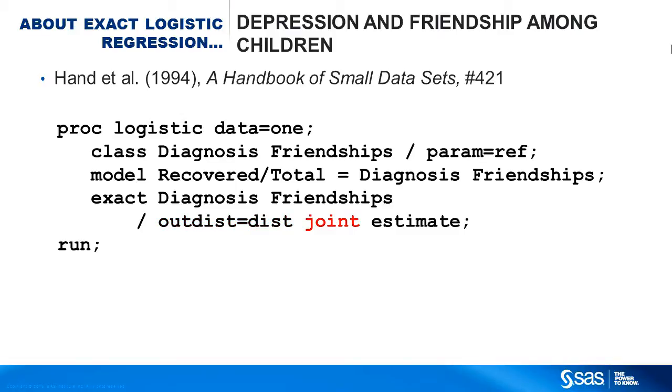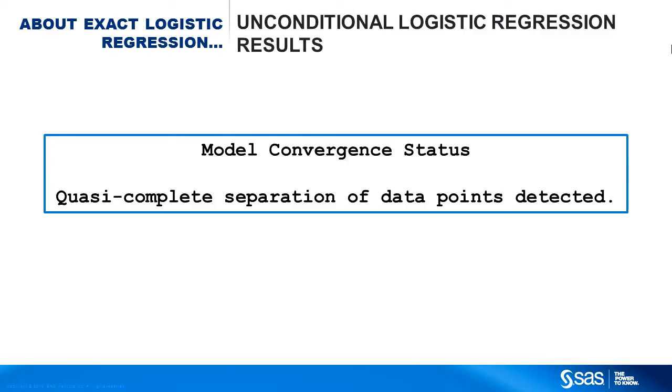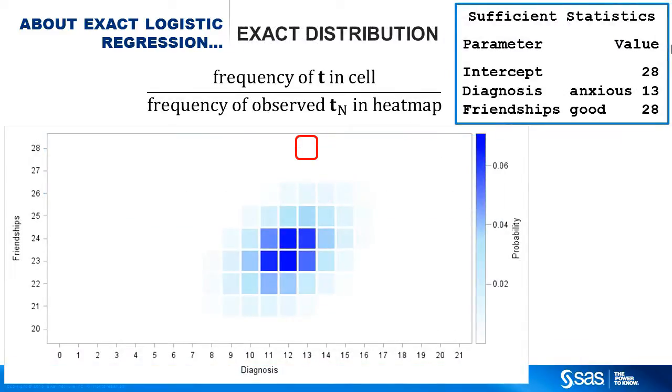The outdist equal option outputs the exact distribution into a dataset. The joint option computes a joint test of the significance of all the parameters. The estimate option displays the parameter estimates. Unconditional logistic regression gives quasi-complete separation, so it's done. Moving on to the exact results. Here's a heat map of the exact distribution, conditioned on the intercept's sufficient statistic being equal to 28.